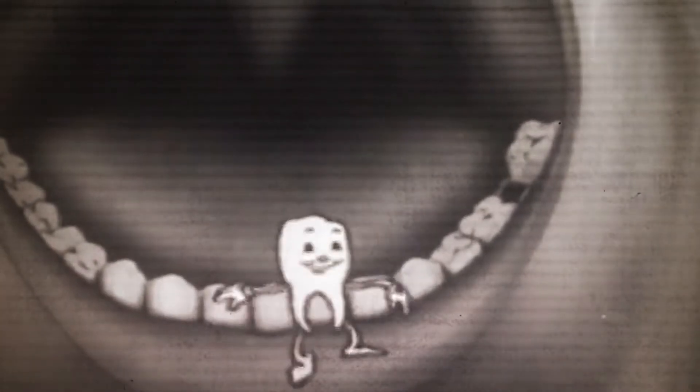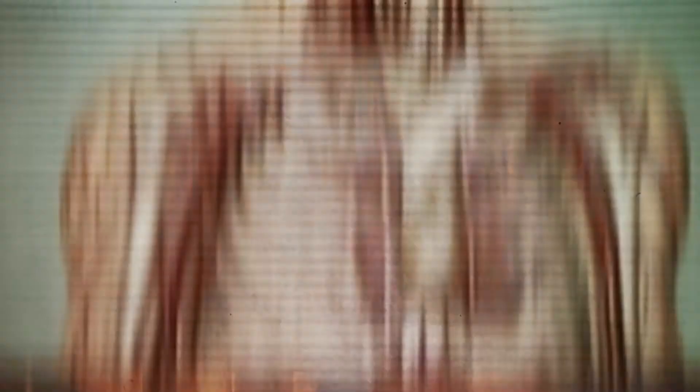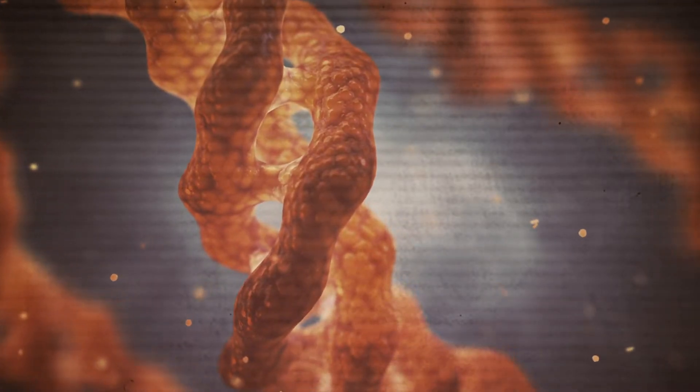For one, teeth are mostly made of minerals. Bones, on the other hand, do have many minerals, but mainly consist of a protein called collagen.